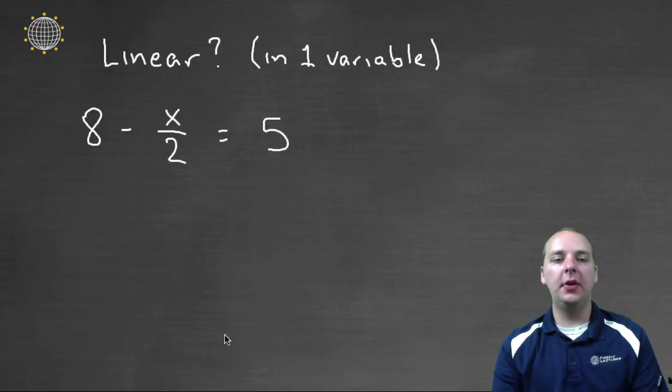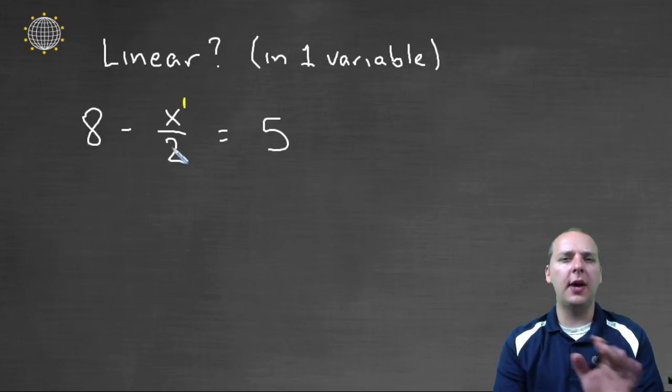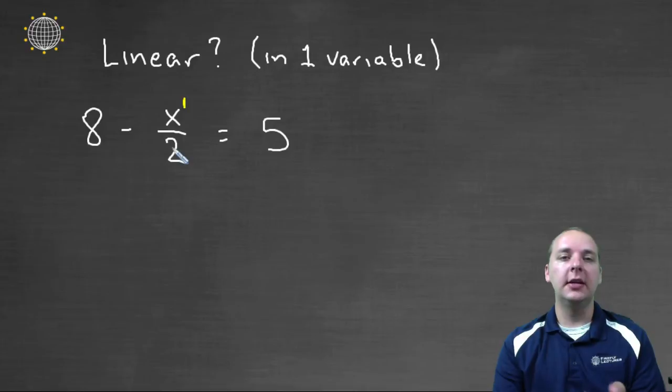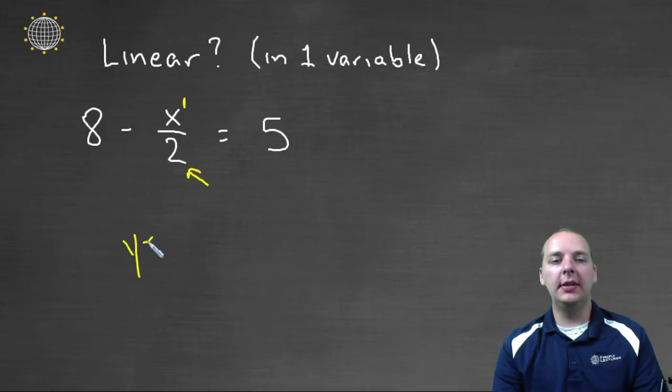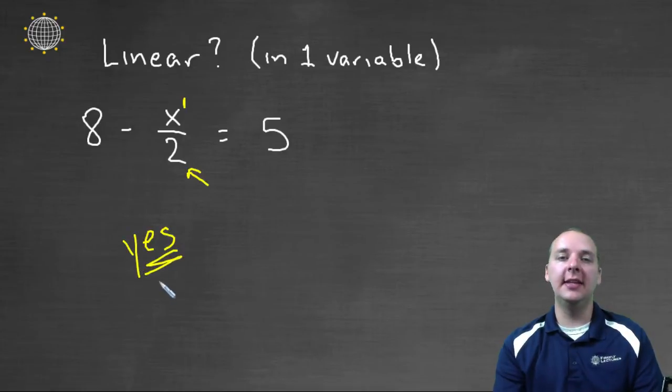I'm going to look at this variable's exponent. The exponent for this variable is one, so that's a bonus. Now I've got a fraction, that worries me a little bit, because I know something about you can't have something with fractions. You can have fractions, you just have to make sure that the x is not in the denominator, and it's not. So this one is a yes, this is a linear equation in one variable.